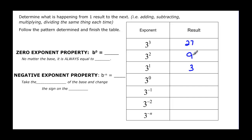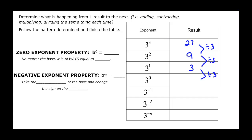From 27 to 9, what did we do? We divided by 3. 27 divided by 3 is 9. What did we do from 9 to 3? 9 divided by 3 is 3. So if I take my 3 and divide it by 3, I'm going to get 1. 3 divided by 3 is 1.